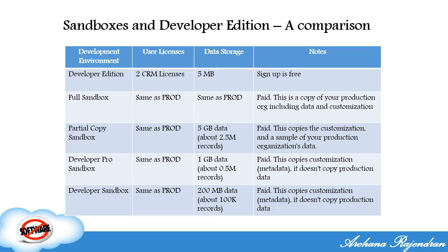Next is the partial copy sandbox, which has complete metadata configuration but does not have 100% of your production data — it just has a sample of your production data. Data storage is comparatively less: it can hold a maximum of 5 GB, approximately 2.5 million records. Then comes developer pro sandbox with 1 GB of data, about 0.5 million records. It copies metadata but holds no production data, just sample data. The developer sandbox is on the same lines as developer pro — it copies metadata configuration but doesn't copy production data, with even less data storage than developer pro.